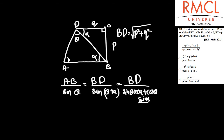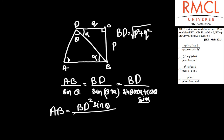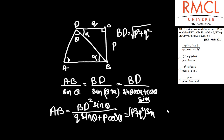Multiplying and dividing by BD, AB equals BD squared times sin theta divided by the denominator. We know that BD cos alpha equals Q and BD sin alpha equals B. So this becomes: AB equals (B squared plus Q squared) sin theta divided by Q sin theta plus B cos theta.